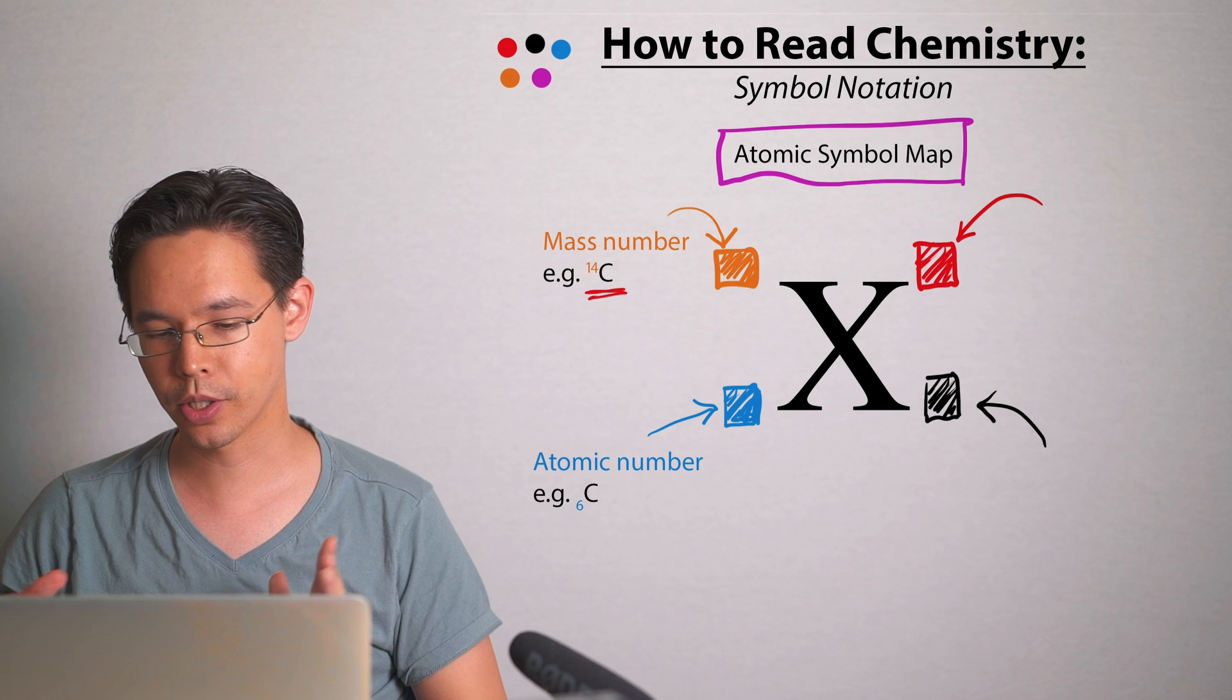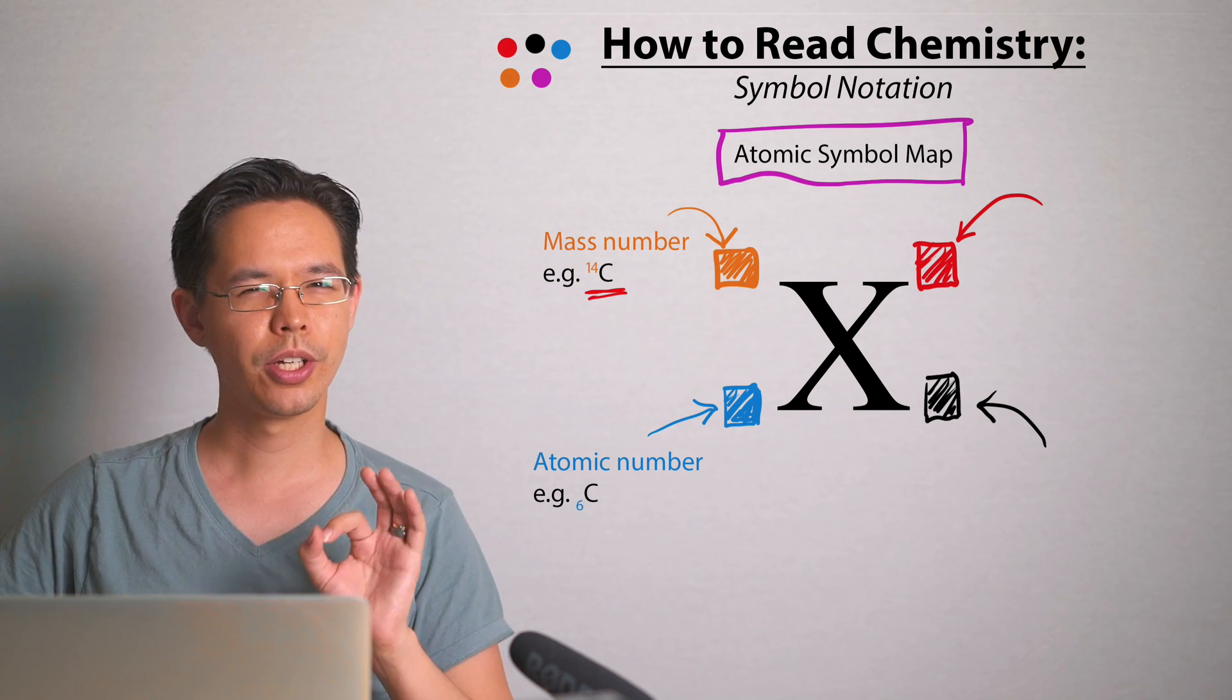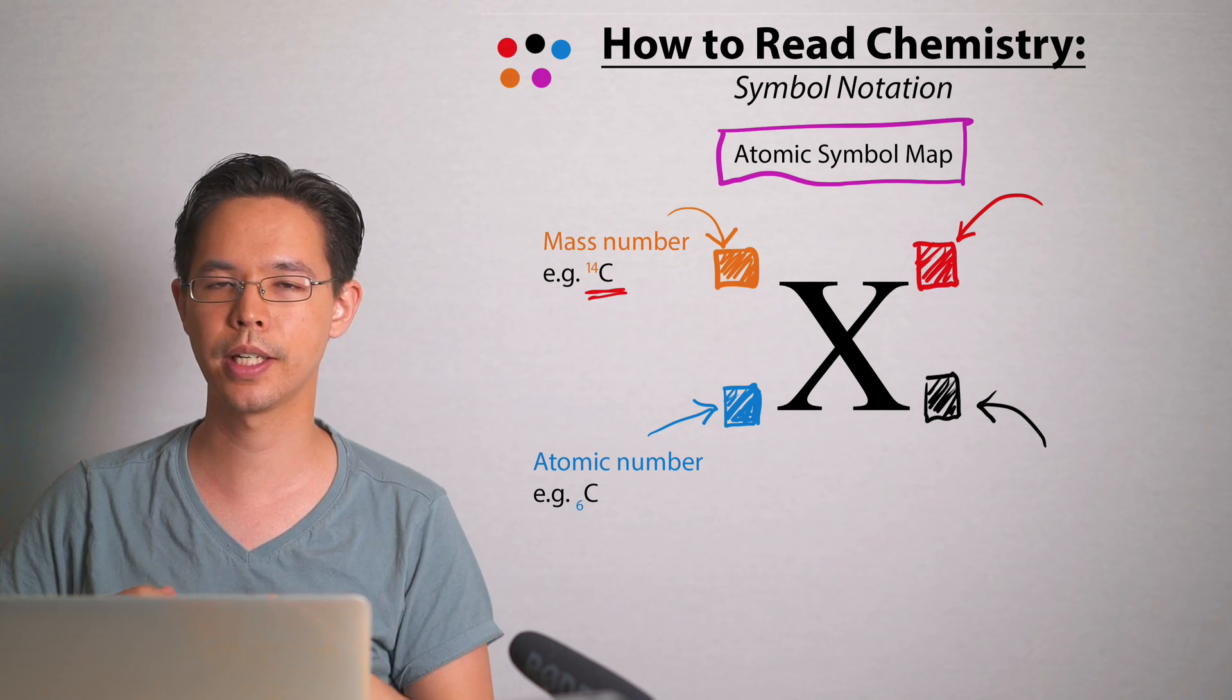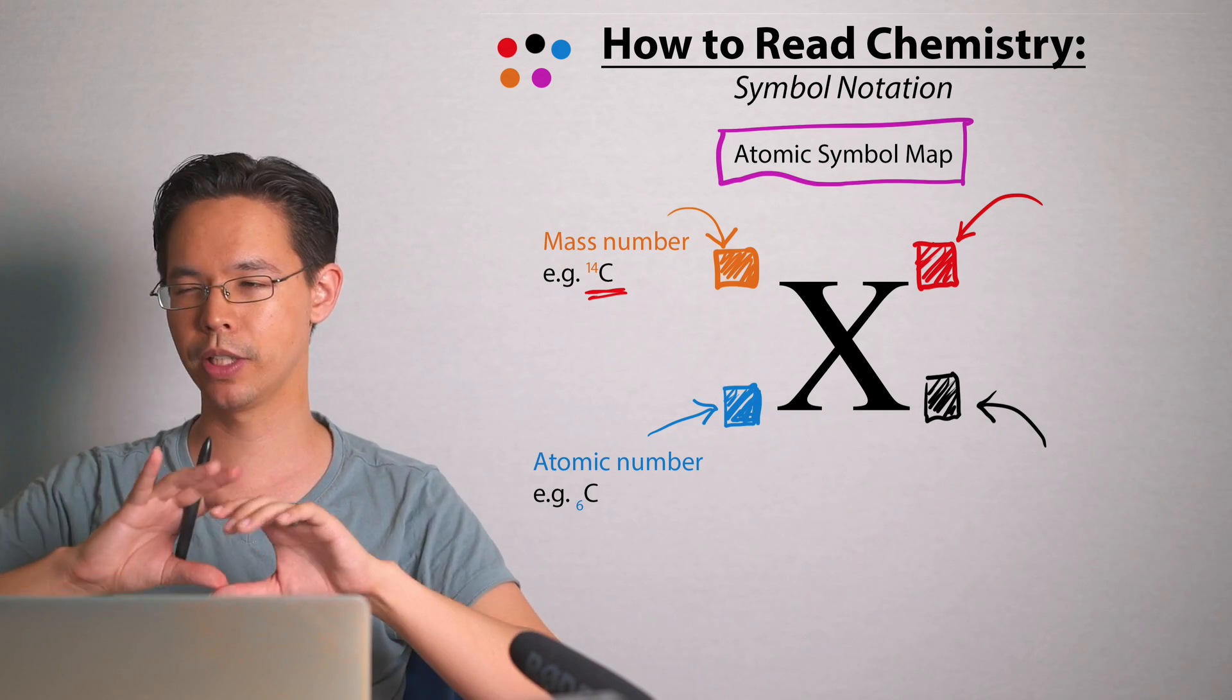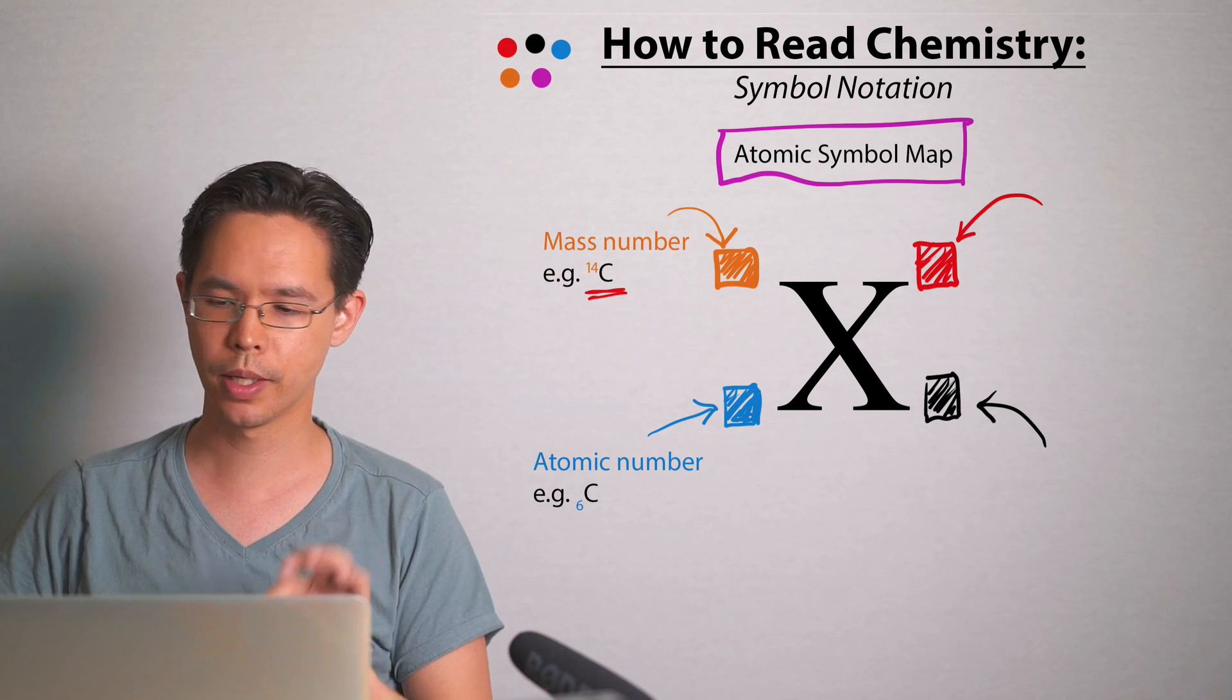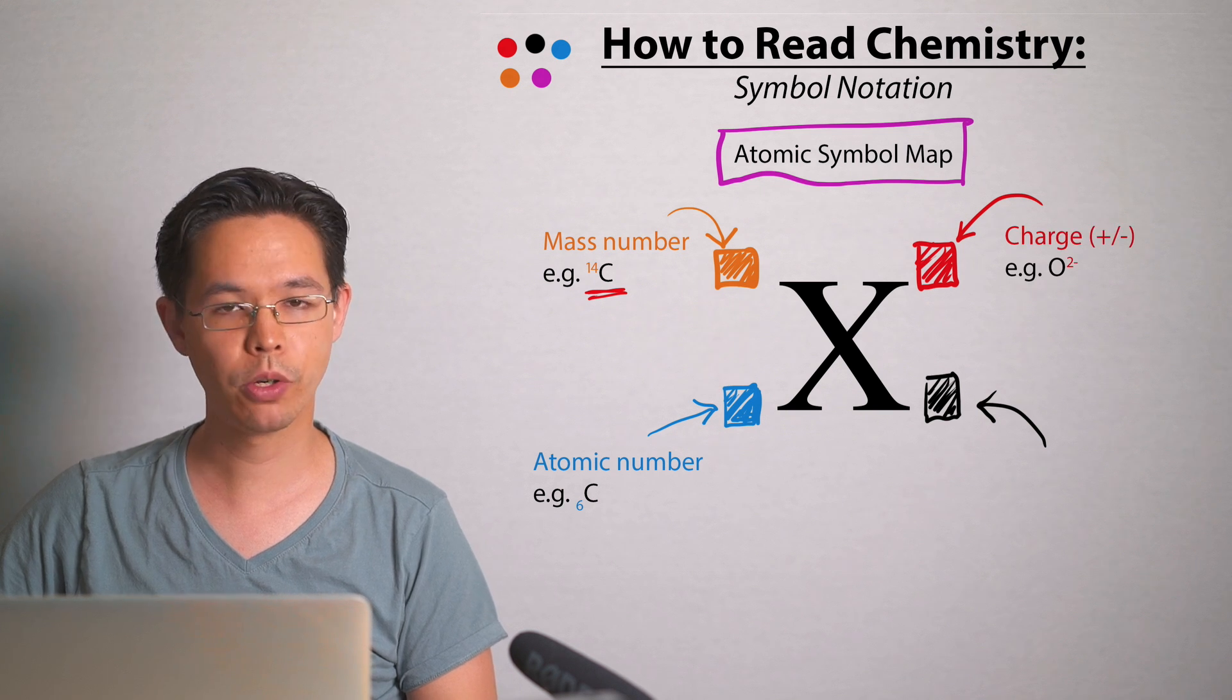Bottom corner, we've got the atomic number, so that tells us how many protons there are. Very easy and good information to have. It's very rarely drawn into a symbol like this unless it's in a question where they're presenting information to you to work with. In an everyday sense, you rarely ever see information written in this bottom corner, but if you do see it, that's what it means: atomic number.